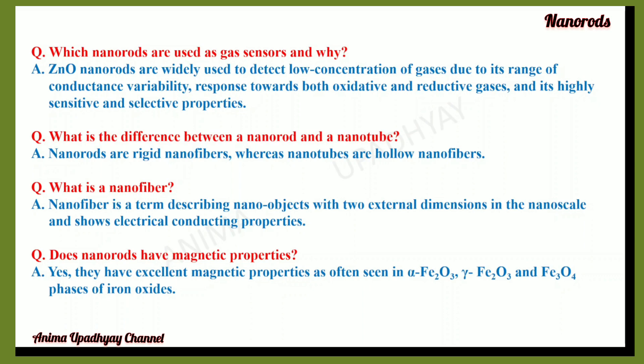What is the difference between a nanorod and a nanotube? Nanorods are rigid nanofibers, whereas nanotubes are hollow nanofibers. What is a nanofiber? A nanofiber is a term describing nano-objects with two external dimensions in the nanoscale that show electrical conducting properties. Do nanorods have magnetic properties? Yes, they have excellent magnetic properties, as often seen in alpha-Fe₂O₃, gamma-Fe₂O₃, and Fe₃O₄ phases of iron oxides.